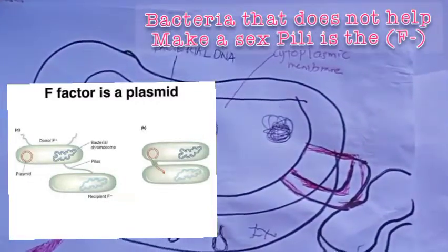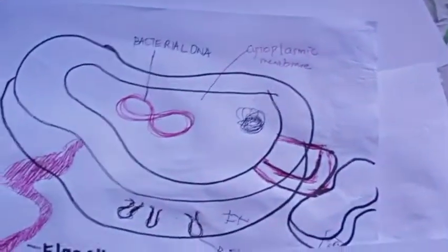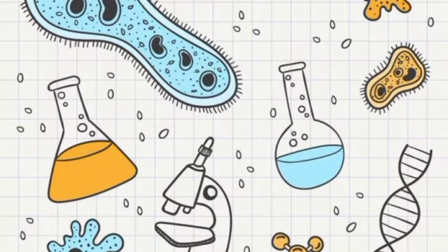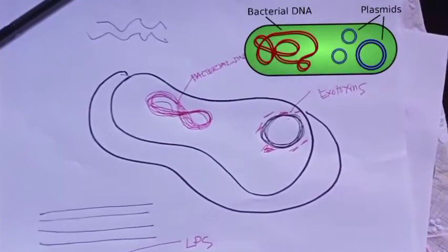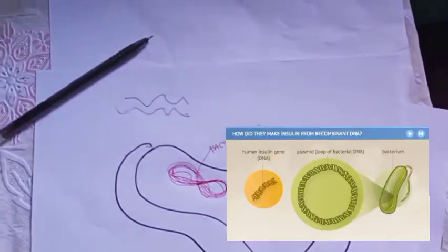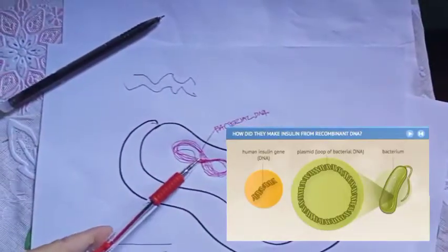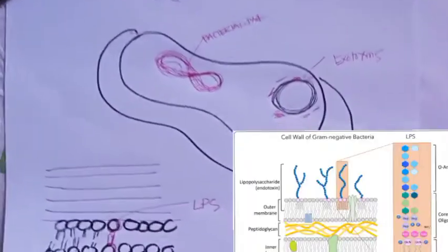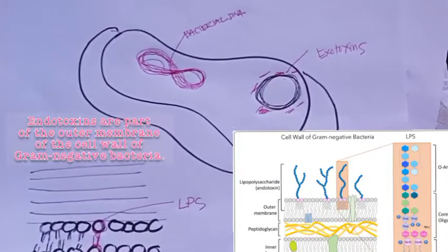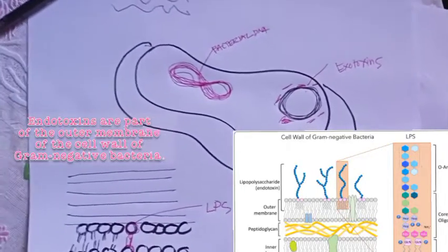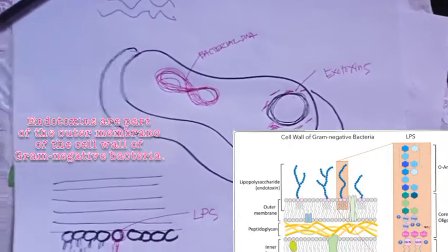Now let's move to bacterial DNA. The bacteria has a double-stranded chromosomal DNA which is circular. Importantly, the LPS or lipopolysaccharide in gram-negative bacteria is a toxin called an endotoxin, and this endotoxin is encoded by the bacterial chromosome.